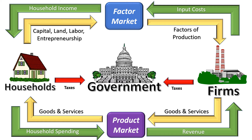Taxes are money you have to give to the government, but the government also gives you things like welfare. Even if you don't receive welfare directly, you get things from the government — for example, if you're going to college, even without grants you'll probably get federally subsidized loans, meaning the government pays the interest on your loan while you're in school, so that's a form of welfare. It's not just households that receive welfare — businesses also receive welfare, and from the business perspective that's what we refer to as a subsidy.